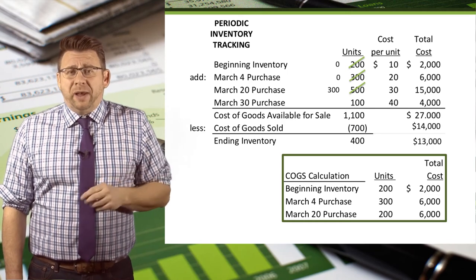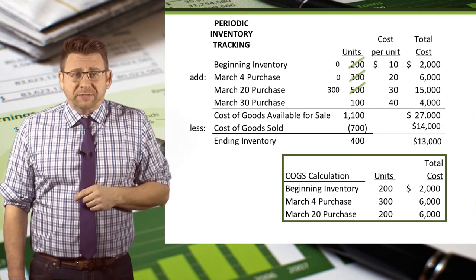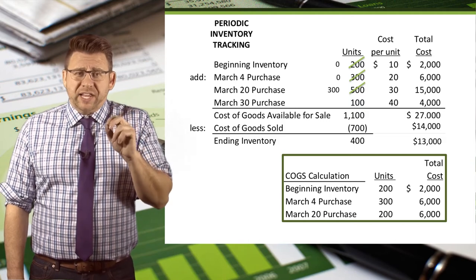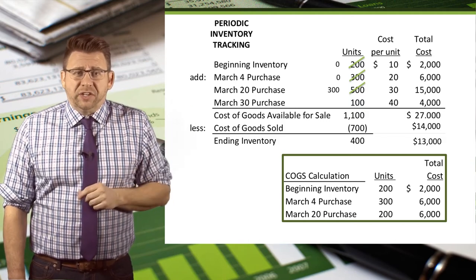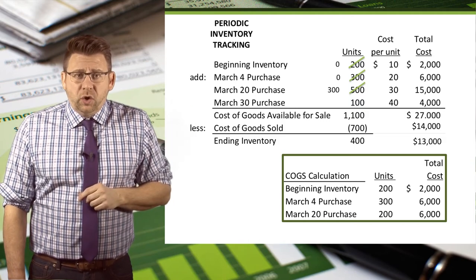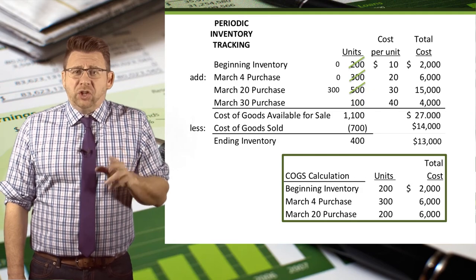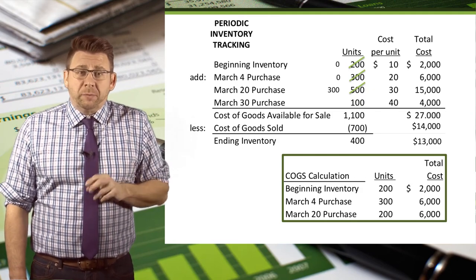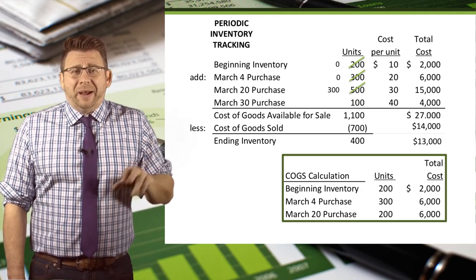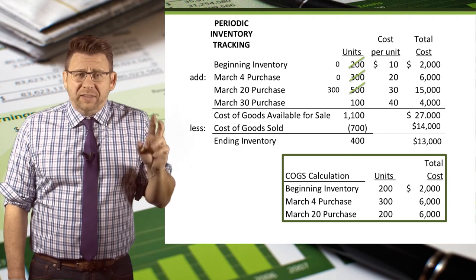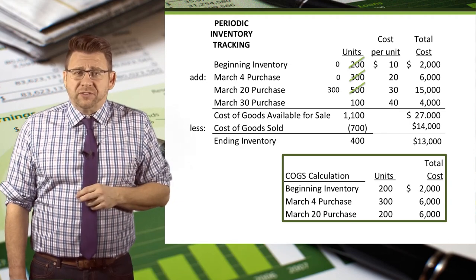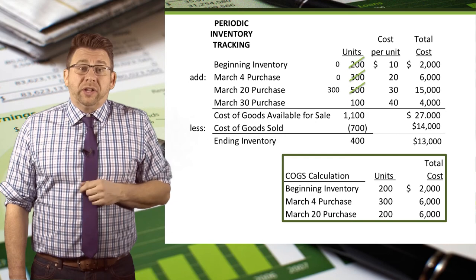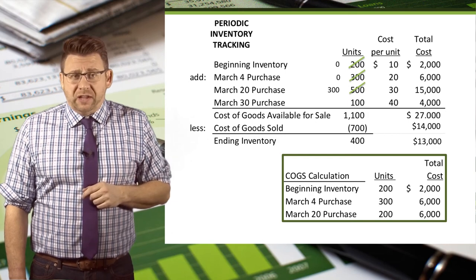Let's plug that amount into the cost of goods sold model. Since the goods available for sale is $27,000, we can determine the value of ending inventory by subtracting the cost of goods sold of $14,000. Therefore, ending inventory is $13,000.